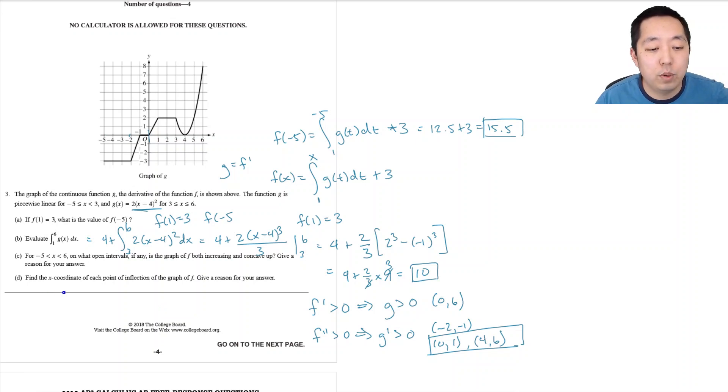Find the x-coordinate of each point of inflection on the graph of f. So point of inflection, second derivative equals 0, that's the same as g prime is equal to 0 or undefined. So when are the slopes 0 or undefined?